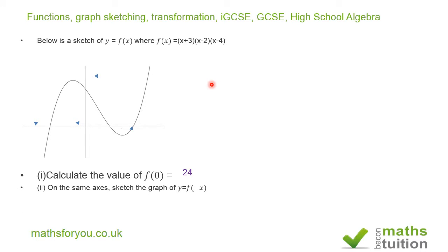The next one says on the same axis sketch the graph of y equals f of minus x. Instead of saying f of minus x, I've given it g of x. It's so much easier to pronounce. We've got g of x there.